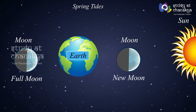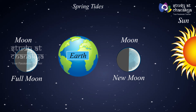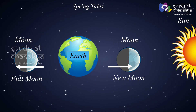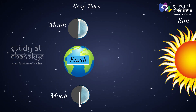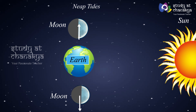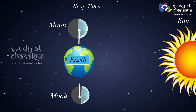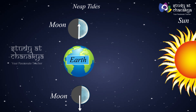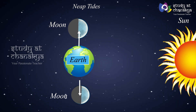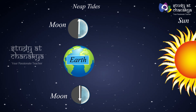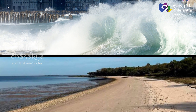When the sun, moon, and earth come in a straight line on full moon and new moon days, the tidal force is intense due to the combined influence of the sun and moon. The tides formed on these days are stronger and are known as spring tides. When the moon and the sun are at an angular distance of 90 degrees from the earth, seven days after full moon or new moon, the tides caused are very weak. Such weak tides are known as neap tides.